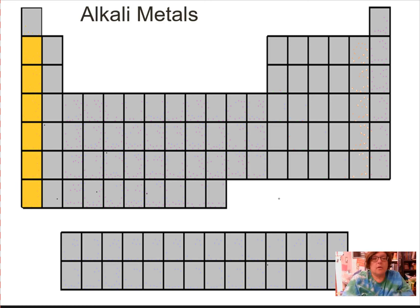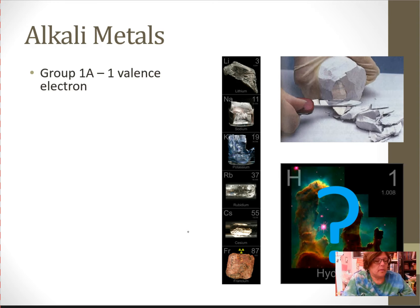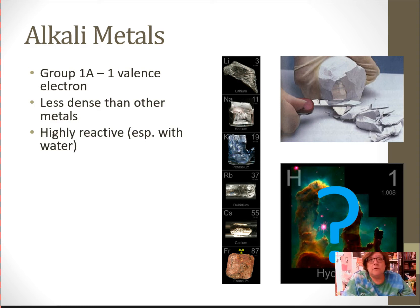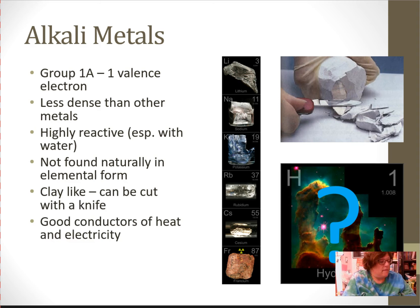The alkali metals are everybody under hydrogen, and I guess we're going to go ahead and start with those notes. The alkali metals have one valence electron. They are less dense than other metals. They are highly reactive. If you put them in water, they will react. They are not found naturally in elemental form. They are always in a compound. They can be cut with a knife. They are good conductors of heat and electricity, and they form positive 1 ions. You can see in the picture they're cutting a piece, I'm assuming that's lithium, but I don't actually know. They're cutting a piece of lithium with a knife.